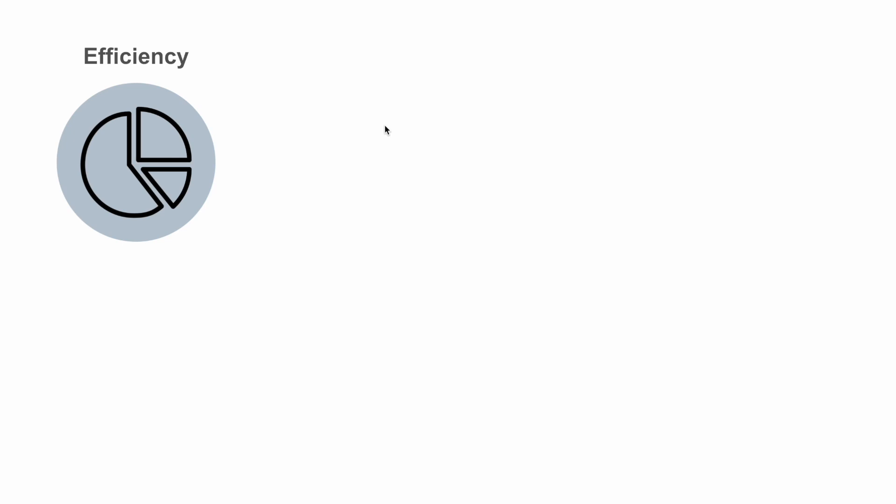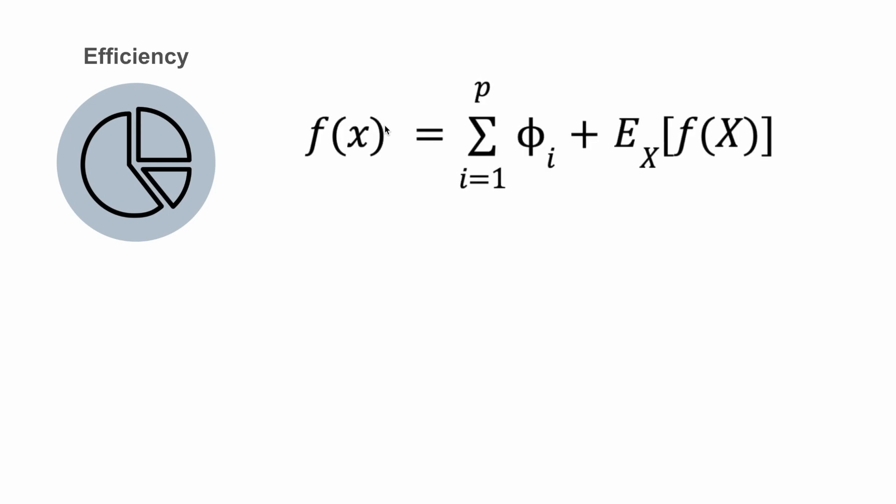Firstly, Shapley values are efficient. Before, this meant that the full value of a game is divided amongst its players. For machine learning, this means the prediction is divided among the features — specifically, the sum of all Shapley values and the average predicted value is equal to the prediction. Another popular interpretation method is LIME, and in comparison, LIME is not necessarily efficient — the weights of LIME will not add up to the original model prediction. For Shapley, we know how each feature has contributed to a prediction, whereas with LIME we only know which feature is most important.